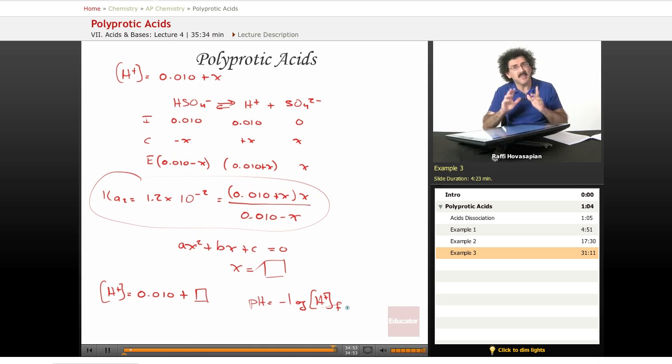For sulfuric acid, if the concentration is one molar or above, you can ignore the second dissociation. If more dilute than one molar (0.8, 0.7, 0.6 or below), the second dissociation contributes significant hydrogen ion. You must add the amount from the first dissociation to the amount from the second, then take the negative log.